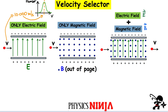Let's look at each field's effect individually. With only an electric field: if you have an electric field and a charge given by elementary charge e, there's a force equal to the charge multiplied by the field magnitude. The electric field points up, so the force on the positive charge acts upward, deflecting it toward the negative plate — the charge is repelled by the positive plate and attracted to the negative plate.